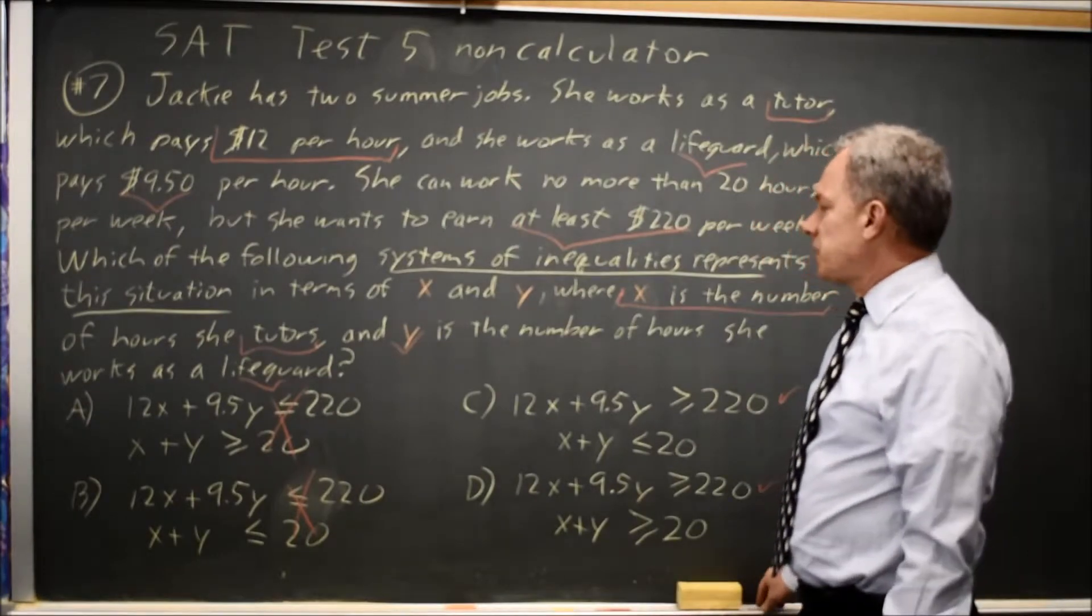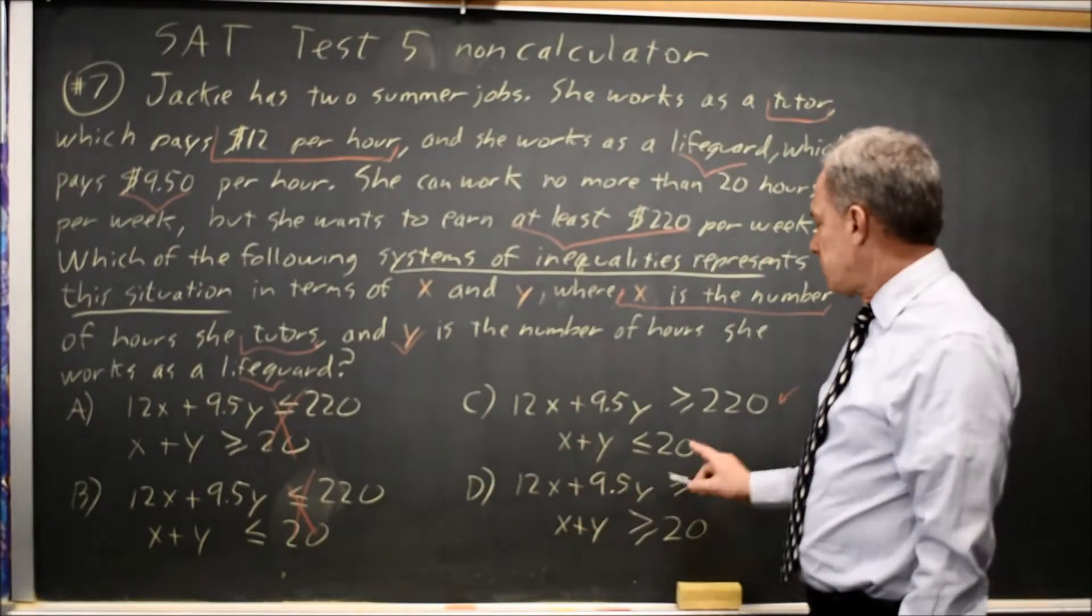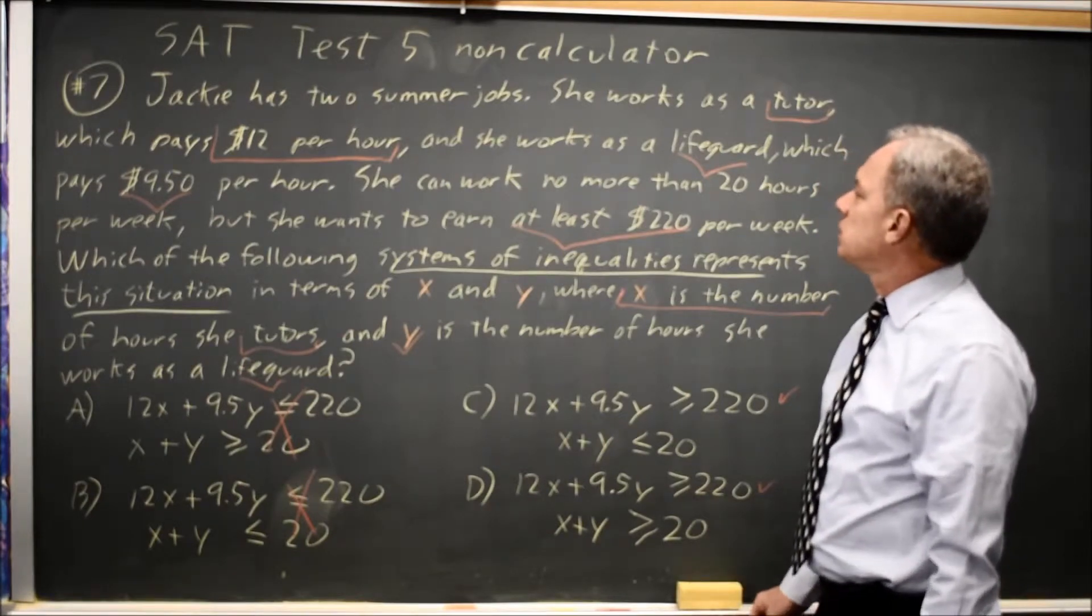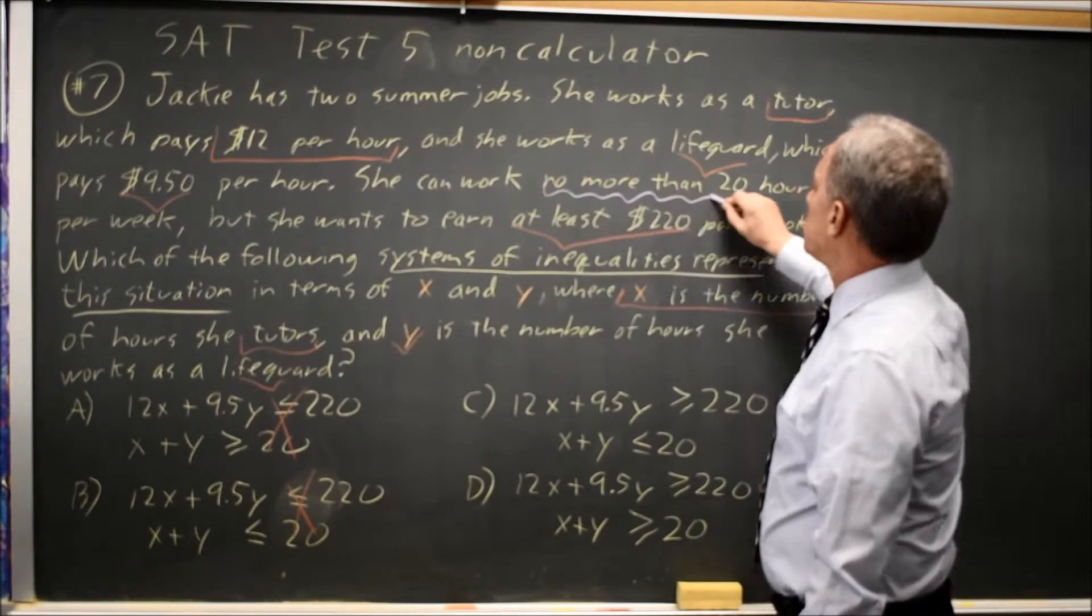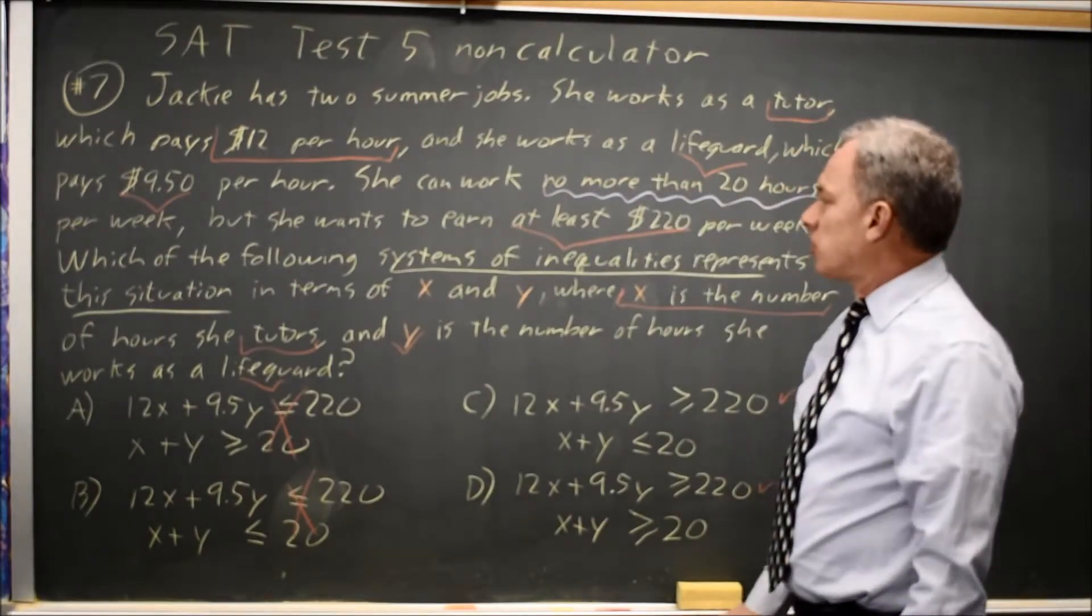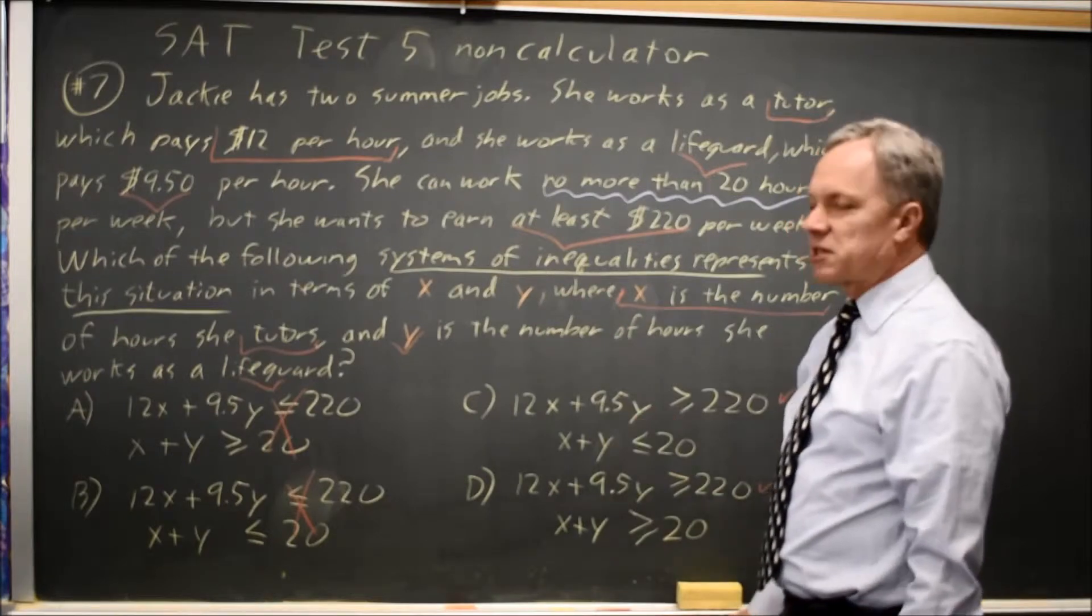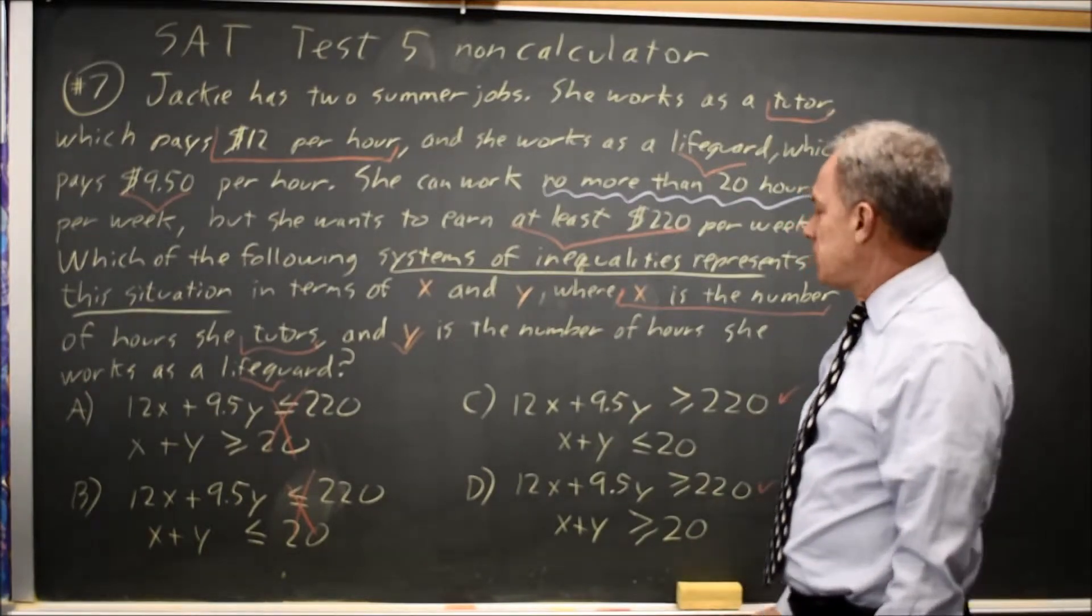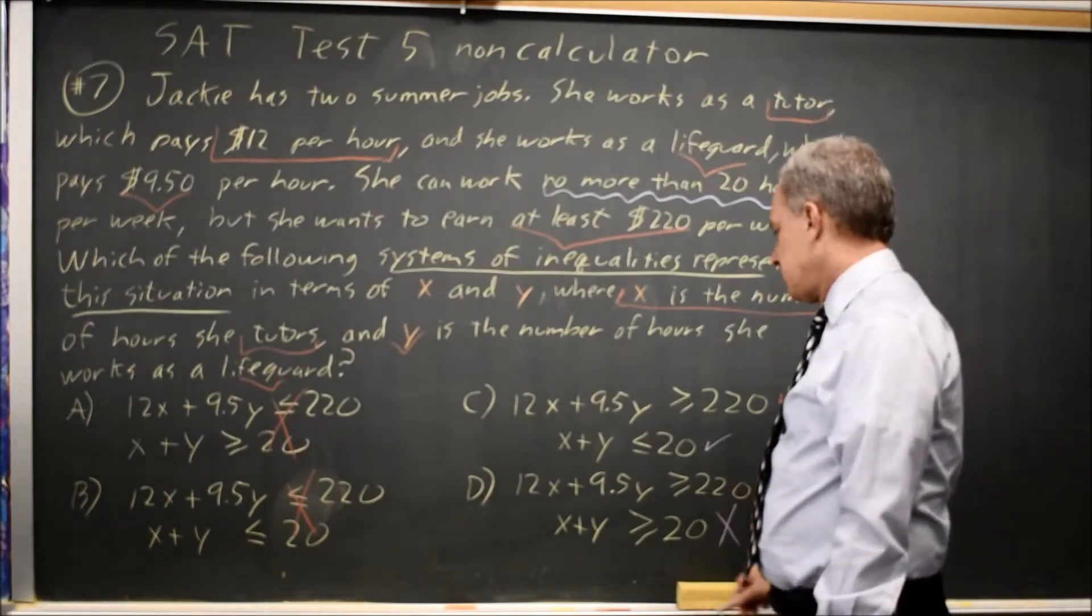Now let's look at the second constraint. Our second equation was always x plus y on the left and 20 on the right. She can work no more than 20 hours. Her hours worked are x hours as a tutor plus y hours as a lifeguard, so x plus y is no more than 20, that's less than or equal to. It is not choice D.